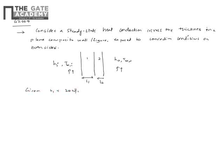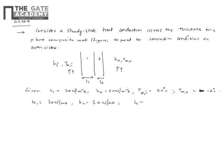Given values: h_i = 20 W/m²K, h_o = 50 W/m²K, T∞_i = 20°C, T∞_o = −2°C, k1 = 20 W/mK, k2 = 50 W/mK, l1 = 0.3 m, and l2 = 0.15 m.